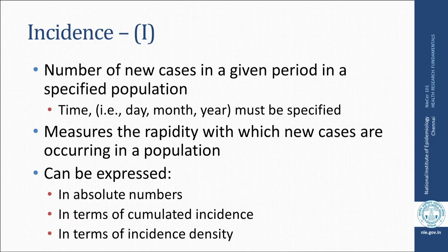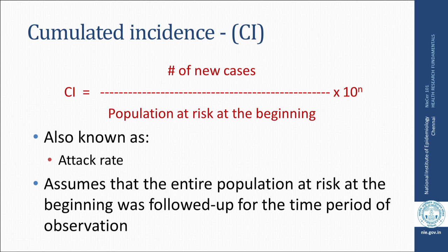Incidence is defined as the number of new cases in a given period in a specified population. Time is an important component — whether measured by day, month, or year must be specified when mentioning incidence. Incidence measures the rapidity or speed with which new cases are occurring in a population. It can be expressed in absolute numbers, in terms of cumulative incidence, or in terms of incidence density.